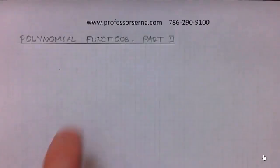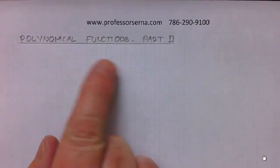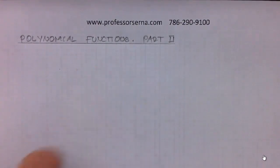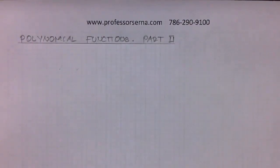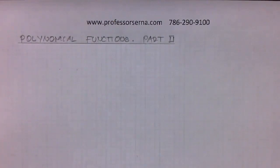In our previous video, Polynomial Functions Part 1, we defined what a polynomial function is and what the degree of a polynomial is. We also spoke about power functions, graphing polynomials using transformations, and we did one simple exercise of graphing a polynomial using the zeros of a polynomial, which we also defined in the previous video.